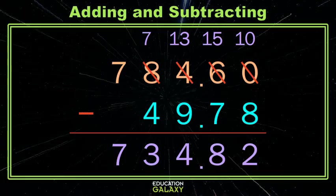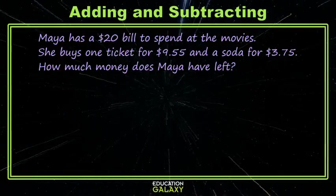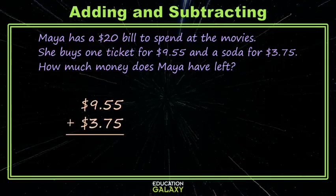Okay, now that we're all warmed up, let's do an example together. Here, Maya goes to the movies with a $20 bill. She buys a ticket, she buys a soda — we want to know how much money she has left. You can do this a few different ways. I'm going to start by adding what she spent. So let's add 9.55 and 3.75. Starting in the hundredths place, 5 and 5 is 10 — leave the 0, carry the 1. 5 and 7 is 12, plus the one we carried, so that's 13 — leave 3, carry the 1, don't forget your decimal. And in the ones place, 9 plus 3 is 12, plus the one we carried, so that's $13.30.